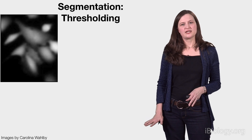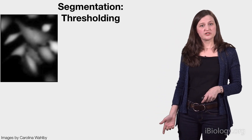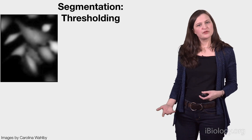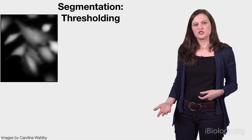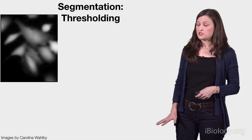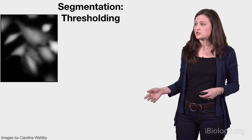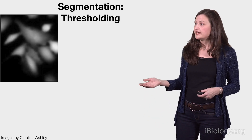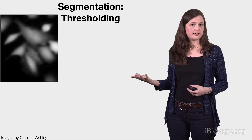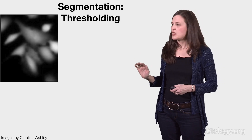Let's start with a super simple segmentation algorithm called thresholding. You can check out Kurt Thorne's iBiology video if you want to understand it in more detail. Thresholding is often just the first step in a segmentation workflow. Sometimes your image might be straightforward enough that thresholding is all you need to answer your problem — this can be the case if the cells are very nicely separated and you have a high signal-to-noise ratio. But often that's not the case, and thresholding is just the first step.